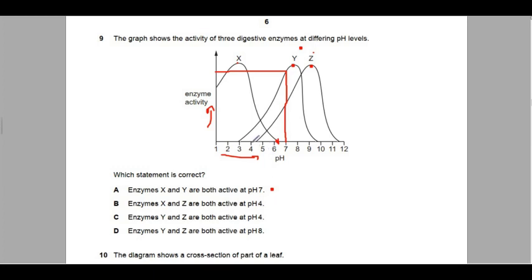You can see there's nothing on Z, so enzyme Z is not active, so enzyme Z is not active there. This one's wrong. Enzymes Y and Z are both active at pH 4? Wrong.